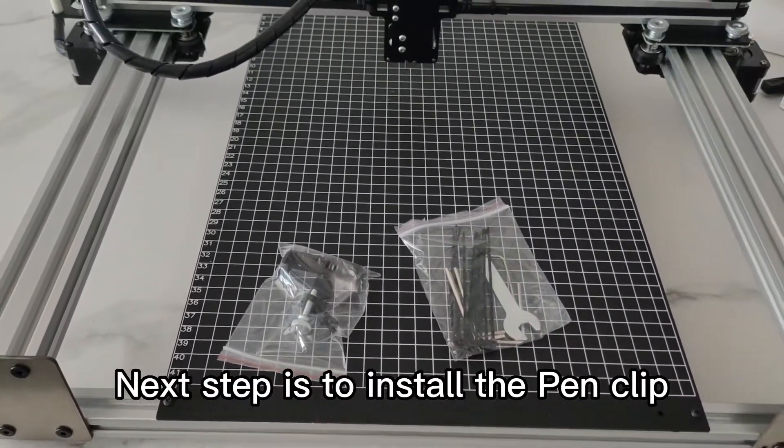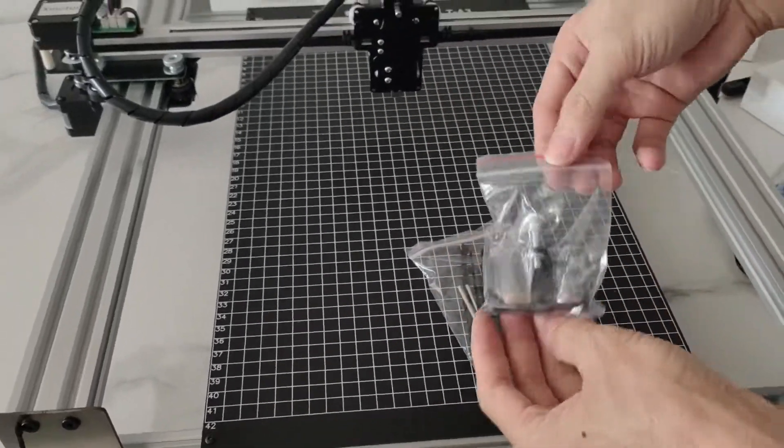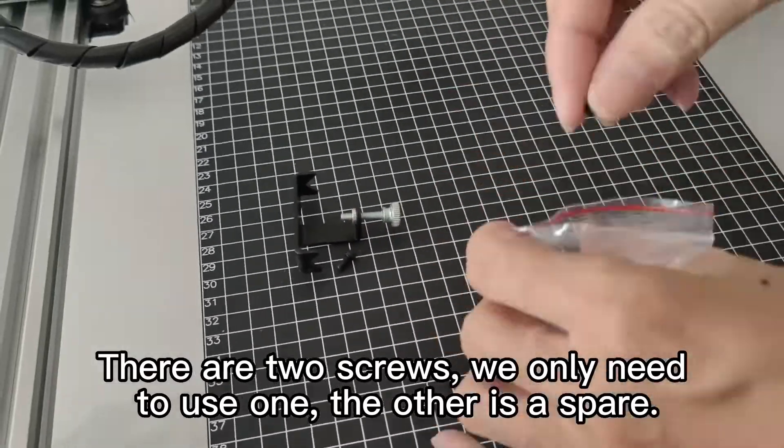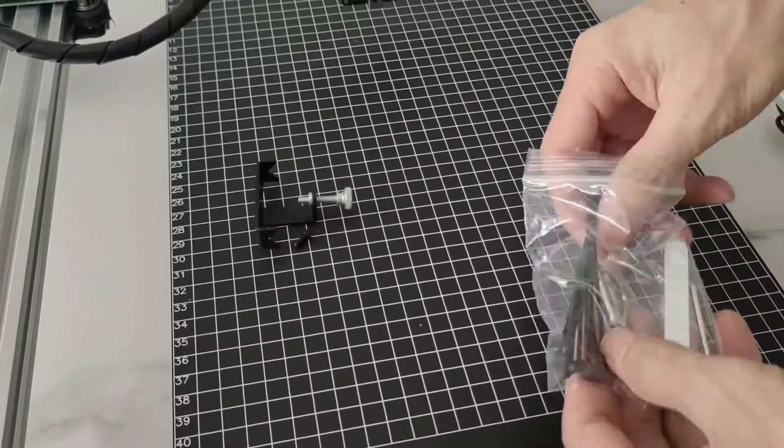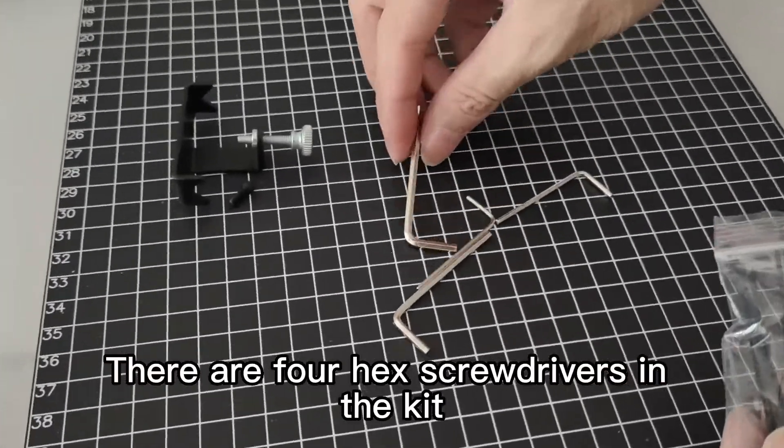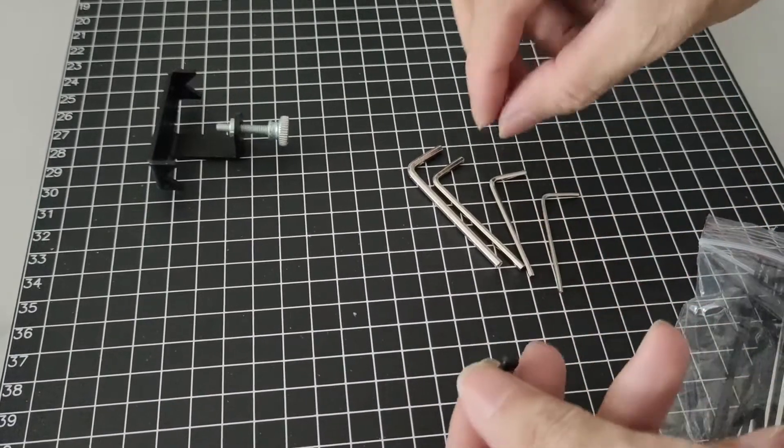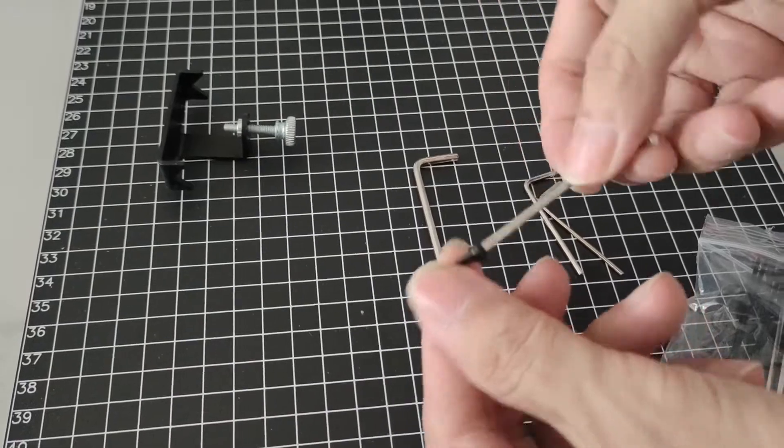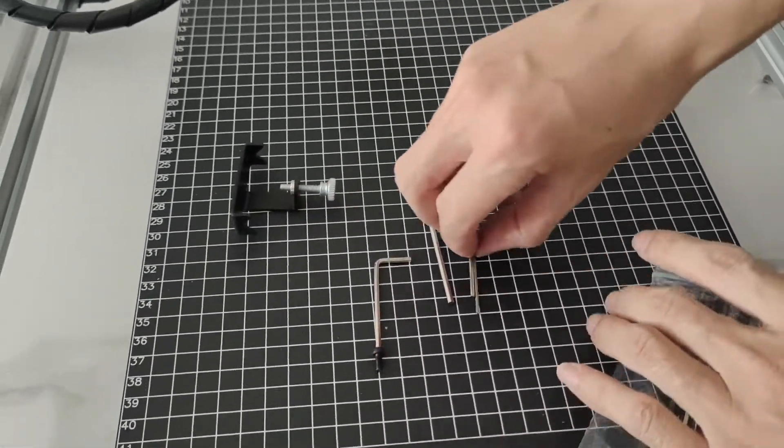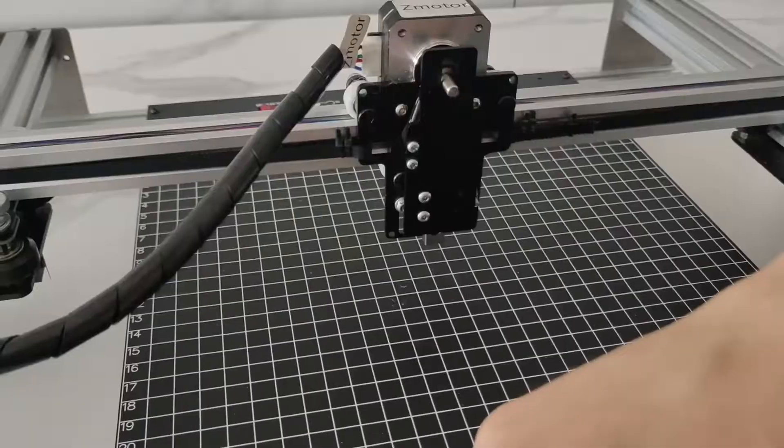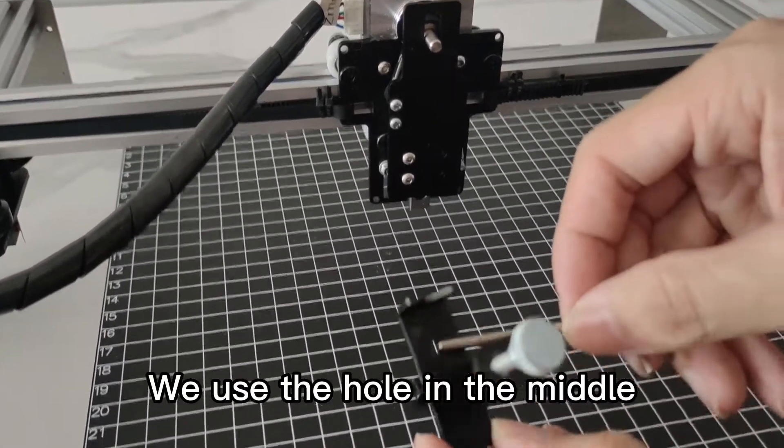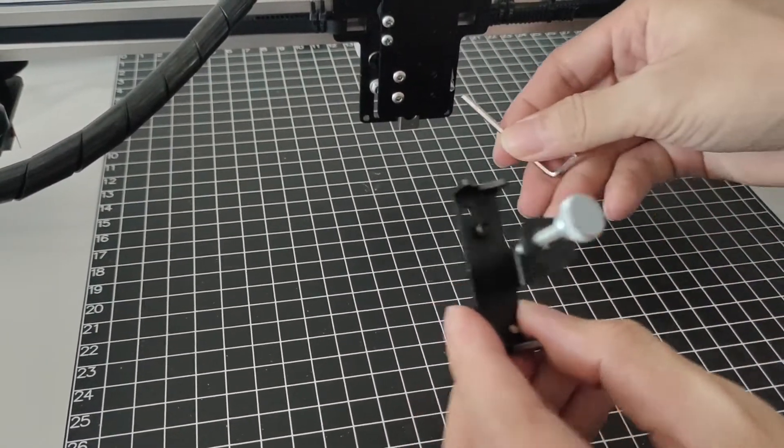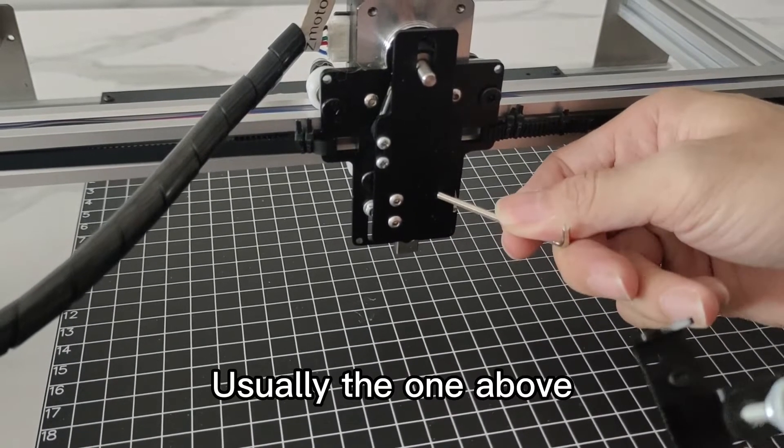Next step is to install the pen clip. There are two screws. We only need to use one. The other is a spare. There are four hex screwdrivers in the kit. Use the second largest hex driver. There are three holes in it. We use the hole in the middle. There are two holes. Usually the one above.